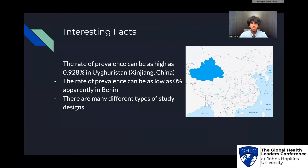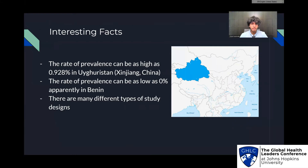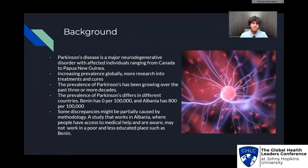Some interesting facts: the rate of prevalence can be as high as 0.9 to 8% in East Turkestan in China, as pictured on the right — that's a very high rate. The rate of prevalence can be as low as 0%, apparently in Benin, which was likely inaccurate due to different variables, such as there not being safe access to certain areas in Benin to measure in the study, or there could be poor healthcare. Parkinson's is a major neurodegenerative disorder which affects individuals from Canada to Papua New Guinea, so this is a truly global problem. In the last three decades, there has been increasing prevalence globally, and there needs to be more research into treatments and cures.